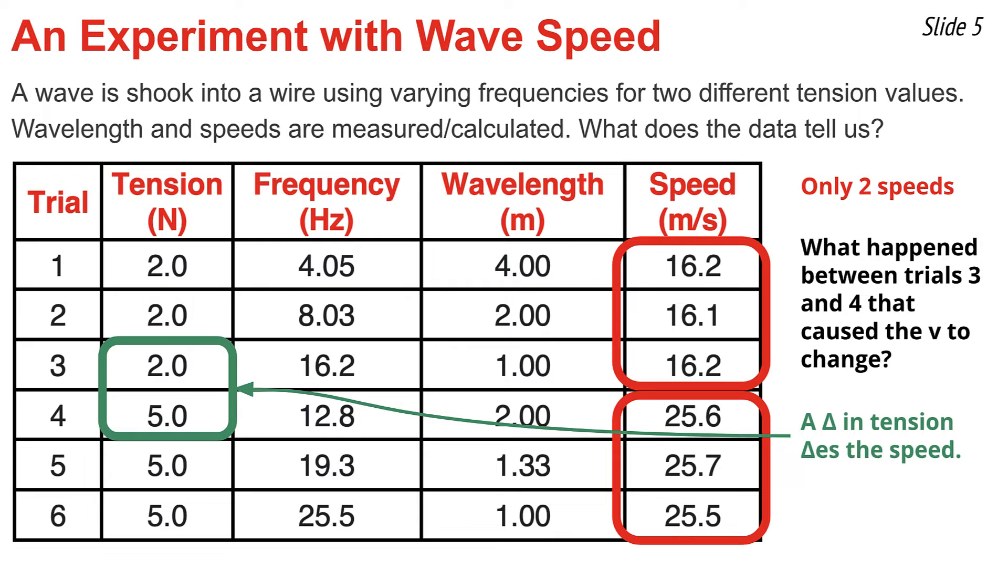In fact, looking at rows 1, 2, and 3, the tension was kept at 2 newtons and the speed remained constant around 16-ish meters per second. The same can be said in trials 4, 5, and 6. The tension was held constant at 5 newtons and the speed was held constant at 25.6 meters per second.